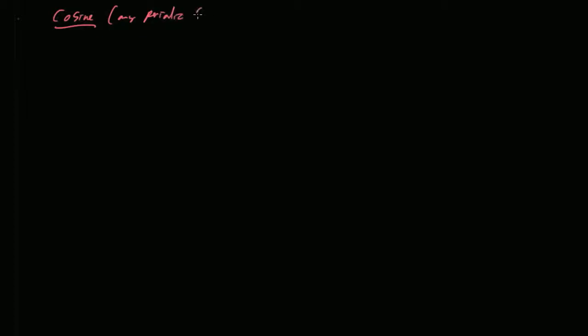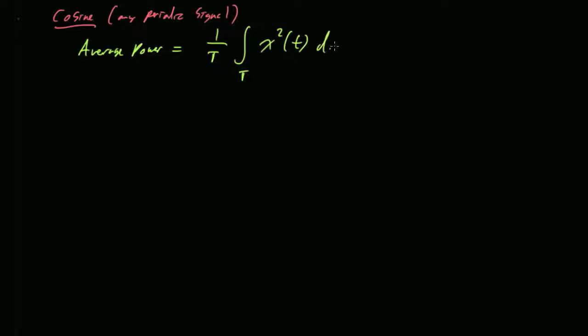For any periodic signal, the average power is defined as 1 over the period times the integral over one period of your signal squared. That's how you define the average power of any periodic signal. You take your signal, square it, integrate that squared signal over one period, and divide by the width of the period.